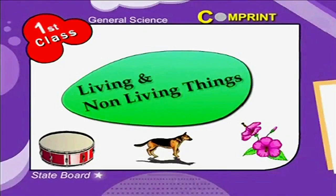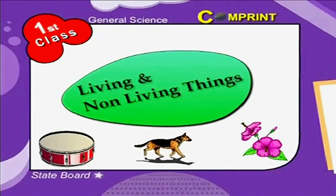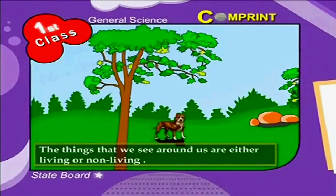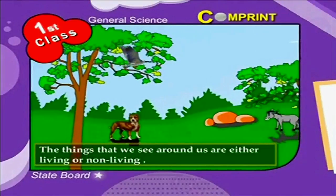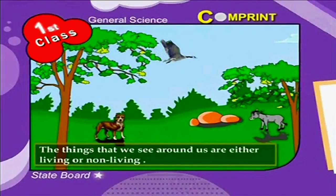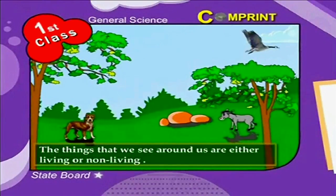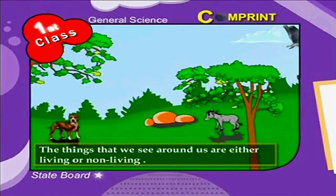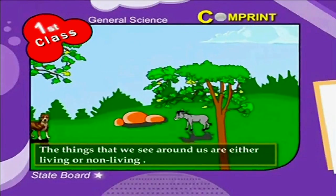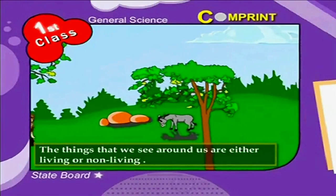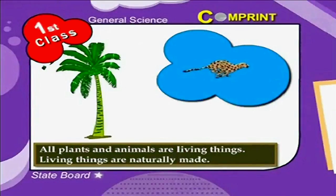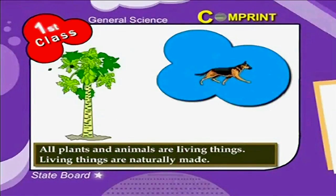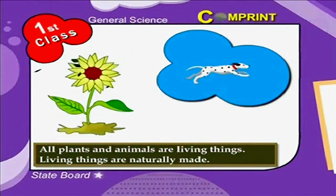Living and non-living things. The things that we see around us are either living or non-living. All plants and animals are living things.